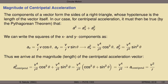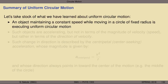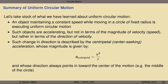Let's take stock of everything learned about uniform circular motion. An object maintaining constant speed while moving in a circle of fixed radius is executing uniform circular motion. Such objects are accelerating, but it's not the magnitude of velocity — the speed — that's changing. Rather, it's the direction of the velocity that is changing. The speed remains constant but the direction changes over and over again as some influence nudges the velocity vector toward the center of motion: center-seeking, or centripetal acceleration. Its magnitude is given by the deceptively simple equation V²/R, and it always points toward the center of the circle.